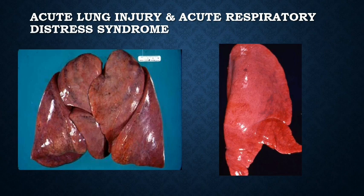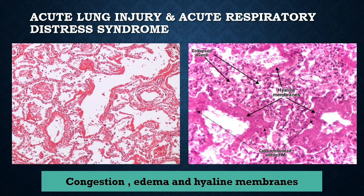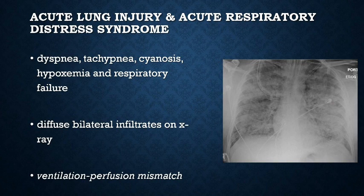Grossly, the lungs appear heavy, firm, red, and boggy. Microscopically, there is congestion, interstitial and intra-alveolar edema with deposition of fluid. The alveolar walls become lined with waxy hyaline membranes. On higher magnification, these hyaline membranes consist of fibrin-rich edema fluid mixed with cytoplasmic and lipid remnants of necrotic epithelial cells.